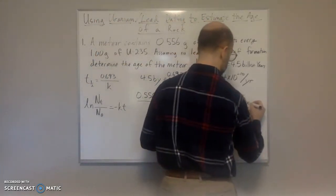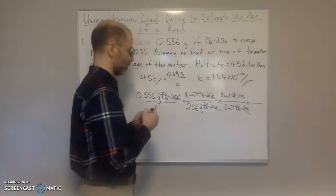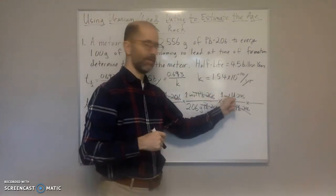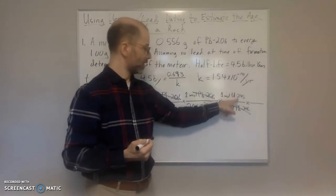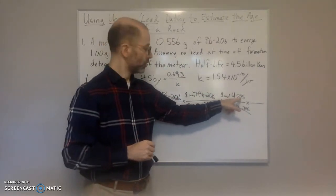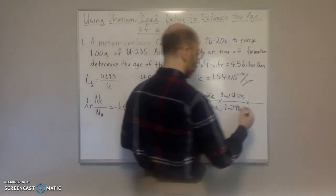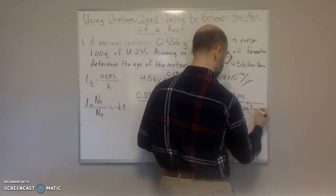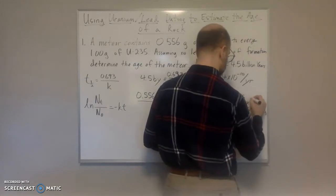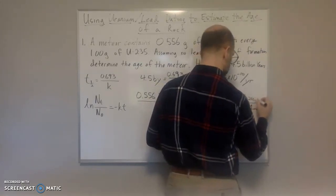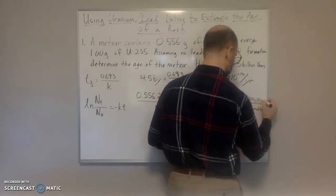So 1 mole of Pb-206 comes from 1 mole of uranium-235. The moles of lead-206 cancel out. Now you have moles of uranium-235. And now we're going to use the mass of uranium-235. Again, we're not going to use the average. We're just going to use the mass of this particular isotope, which is 235.